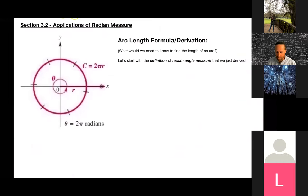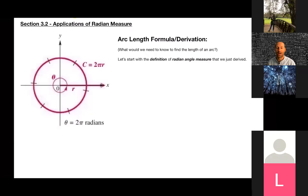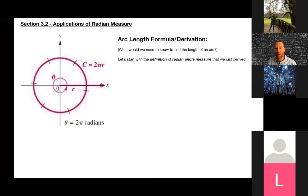Alright, moving on to section 3.2. Now that we've talked in depth about radians, they're going to move us right into the applications. The cool thing about 3.2 is there are only two things we're going to add on. I'll go through the derivation of what each formula is. The two applications with this new angle measurement called radians are: one, arc length, and two, area of a sector.